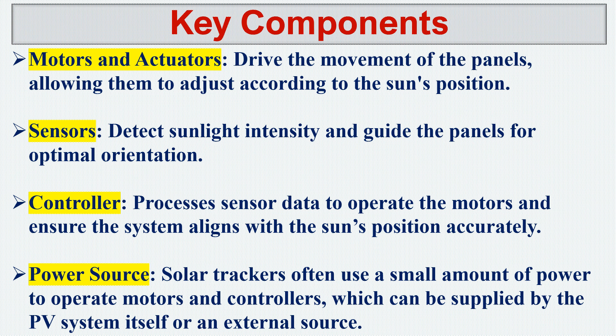The controller processes sensor data to operate the motors and ensure the system aligns with the sun's position. When the sensor reports that the sun's position has changed, the controller processes the information and operates the motor accordingly. The system also requires a power source, since solar trackers use a small amount of power to operate the motor and controller. This power can be sourced from the solar PV system itself or from an external source.